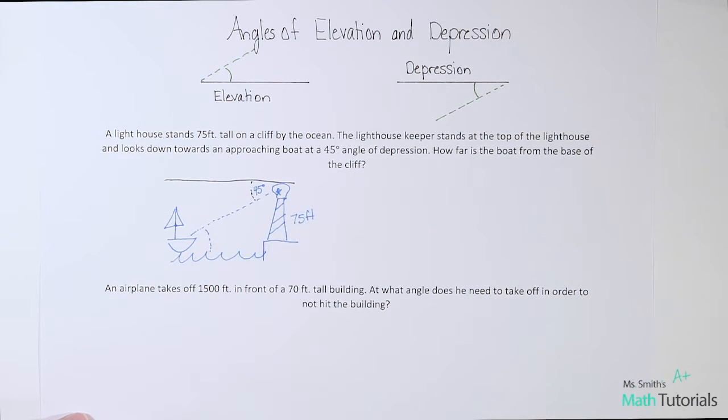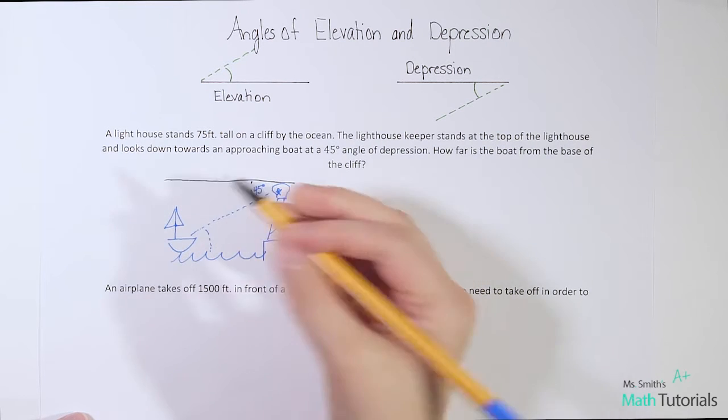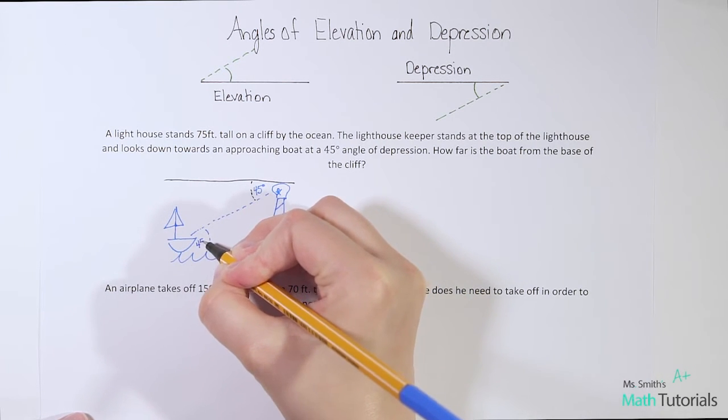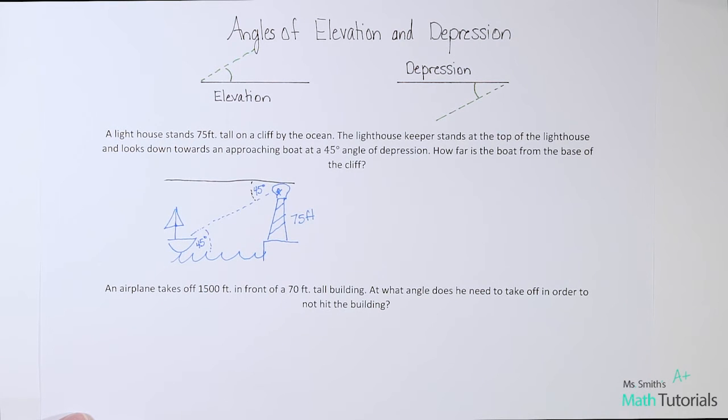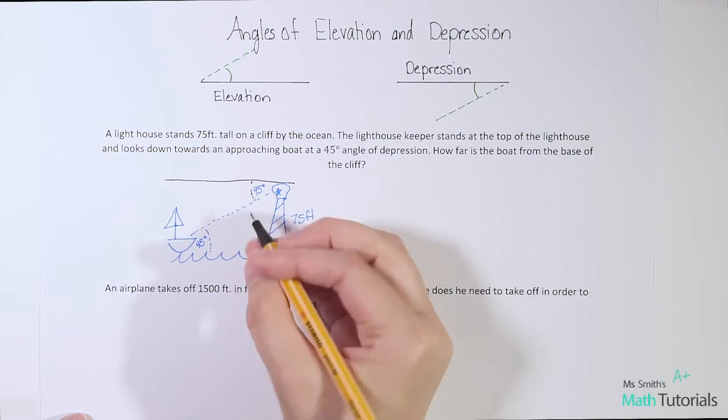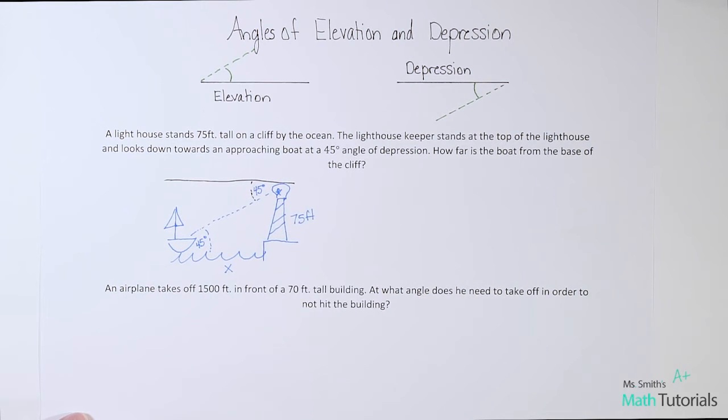If you have no idea what I'm talking about when I say alternate interior angles, you'll want to review my video on angle relationships. But these two are essentially equal to each other. They ask how far is the boat from the base of the cliff, so we'll call that x. That's what we're looking for.